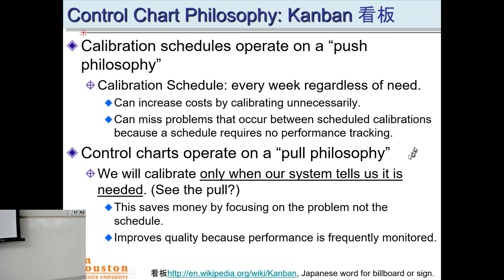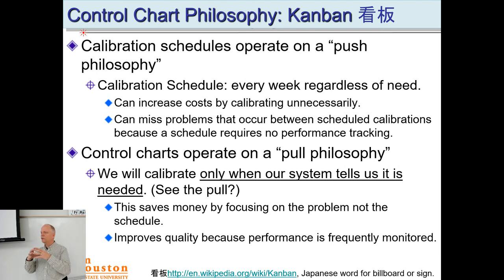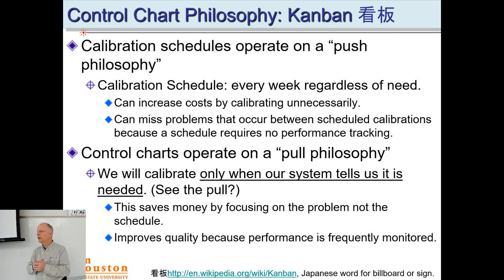Now let's look at control charting — we've already started collecting data. At this point you probably have seven or eight data points, with another week and a half to go. We're still in the training phase, getting familiar with variability. The goal of this assignment is to look at data-driven versus calendar-driven action. Kanban is a Japanese word for sign or banner — we want our instruments to raise a sign when they need help, rather than putting maintenance on the calendar and introducing unnecessary variability.